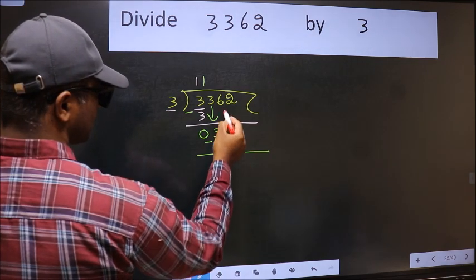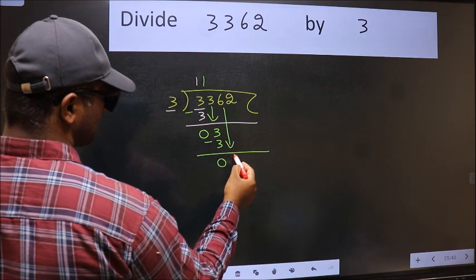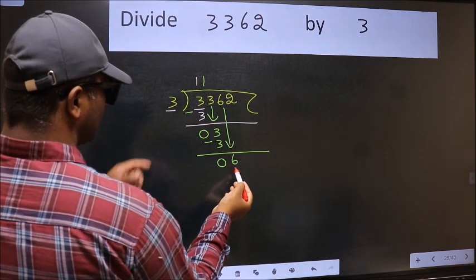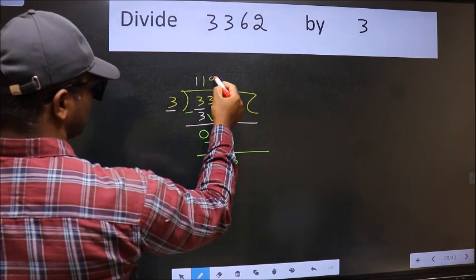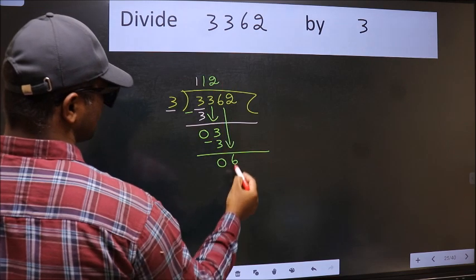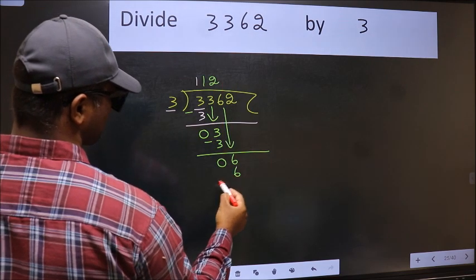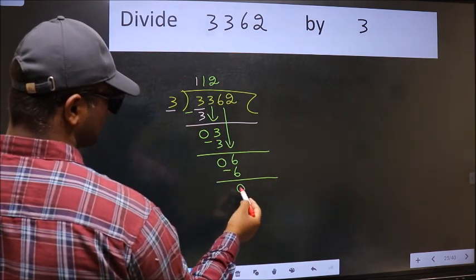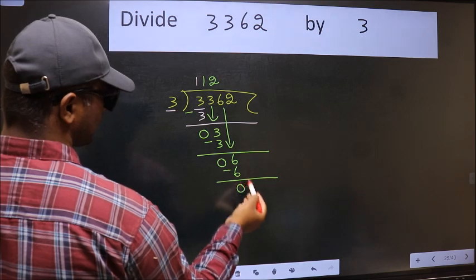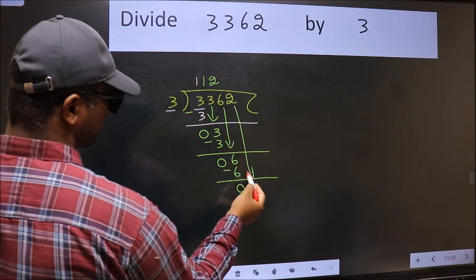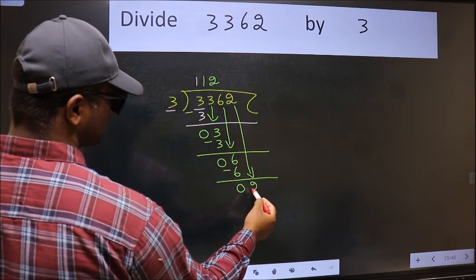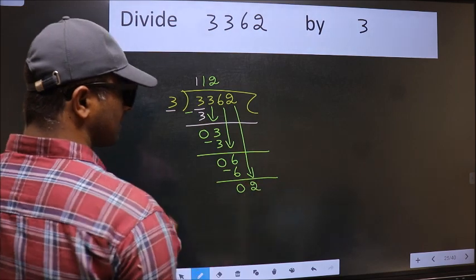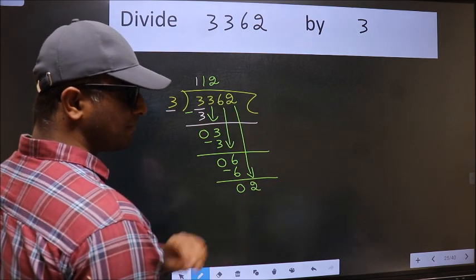After this, bring down the beside number. So 6 down. When do we get 6 in the 3 table? 3 twos are 6. Now we should subtract. We get 0. After this, bring down the beside number. So 2 down. After this step, the mistake happens.